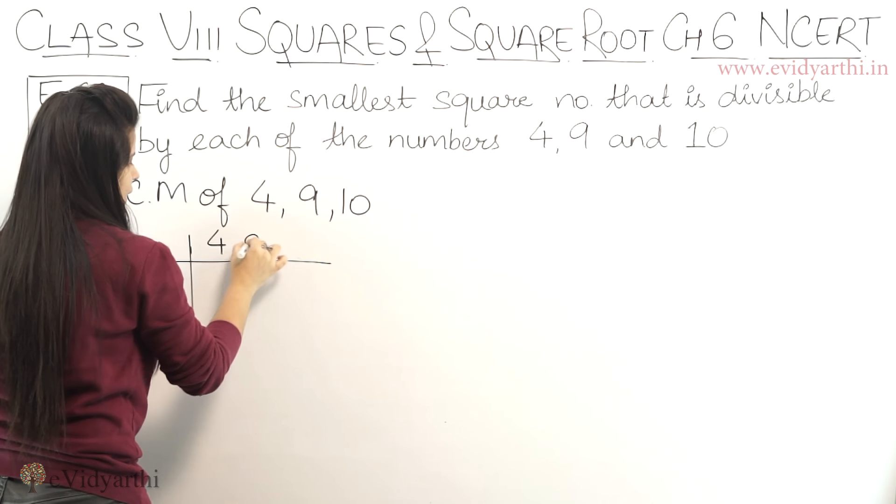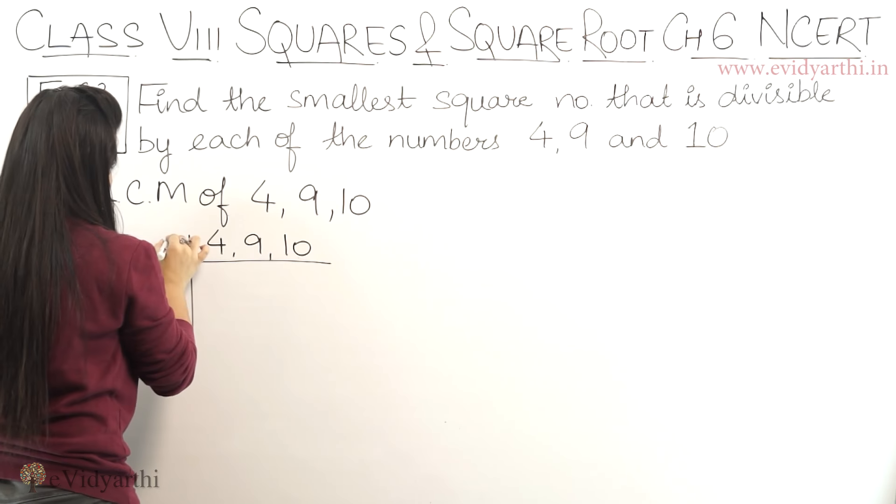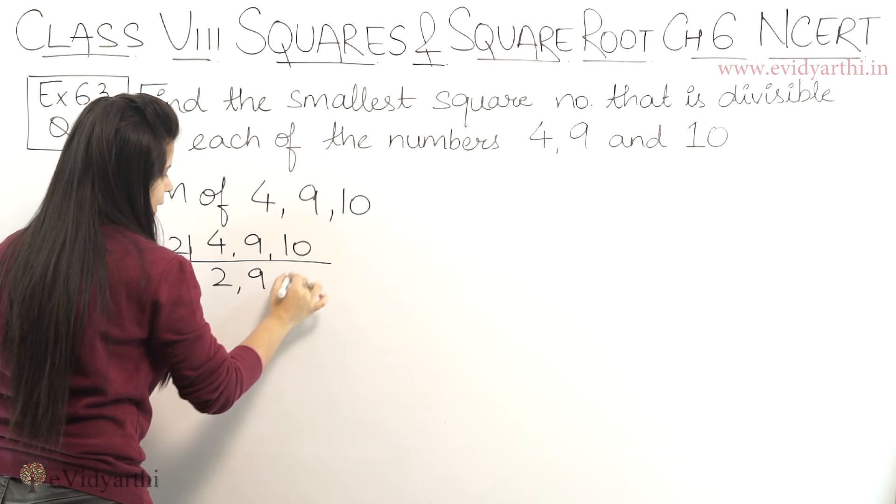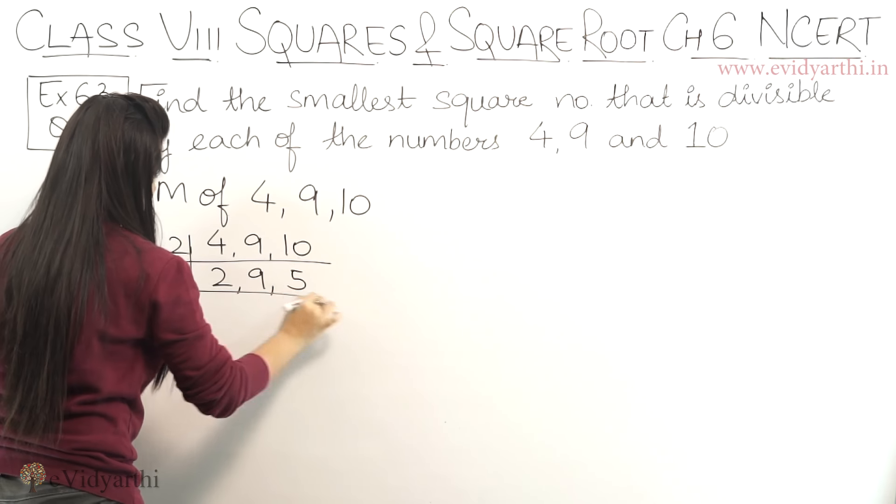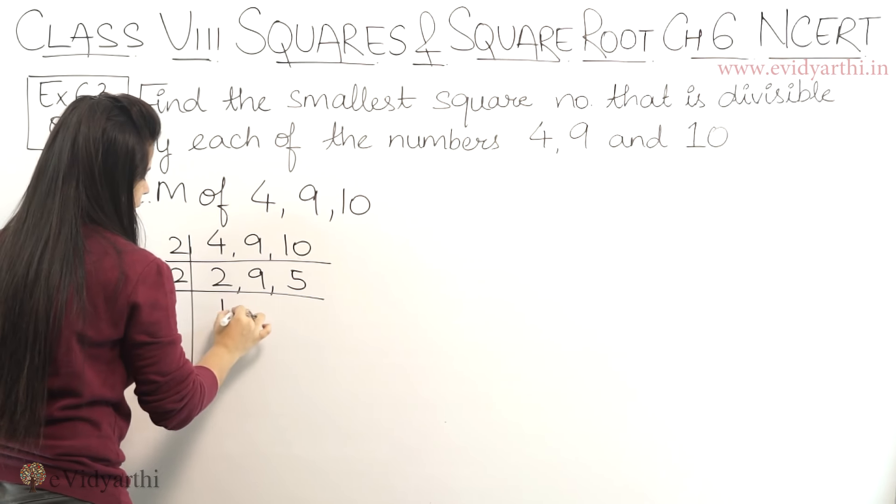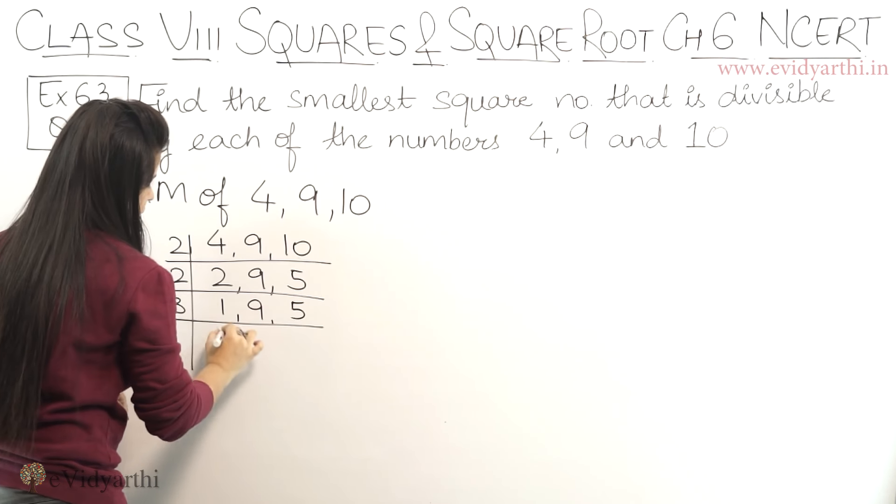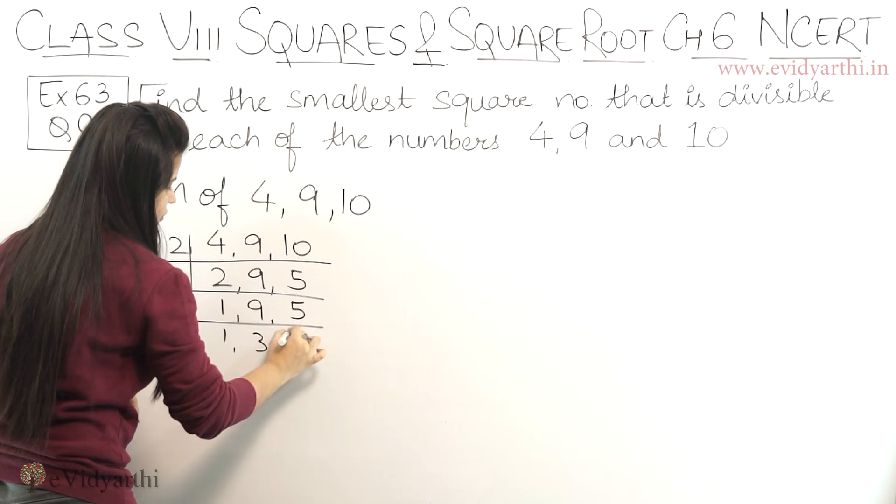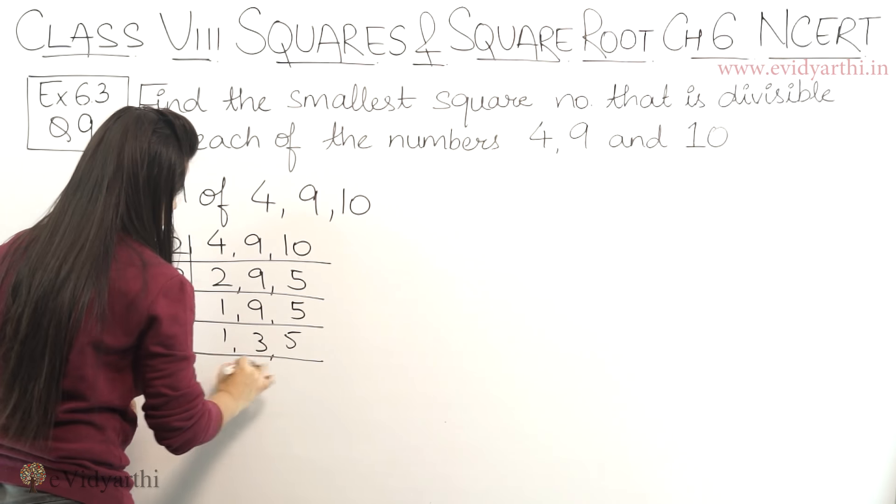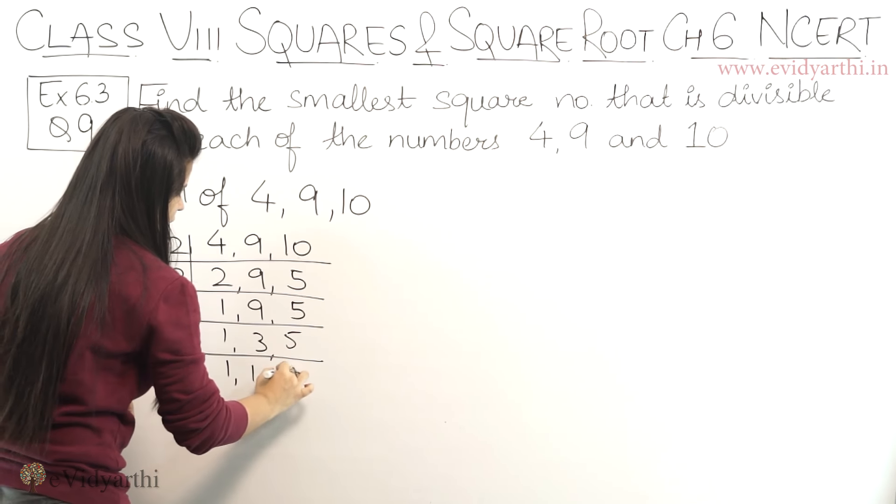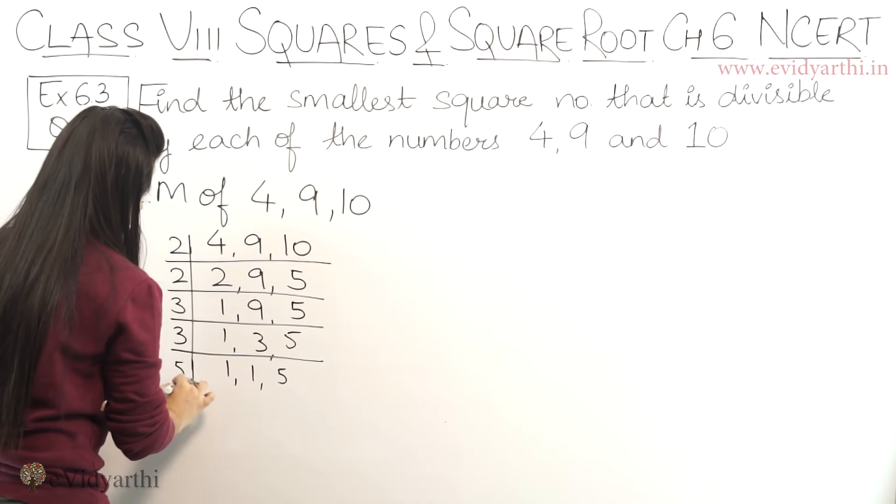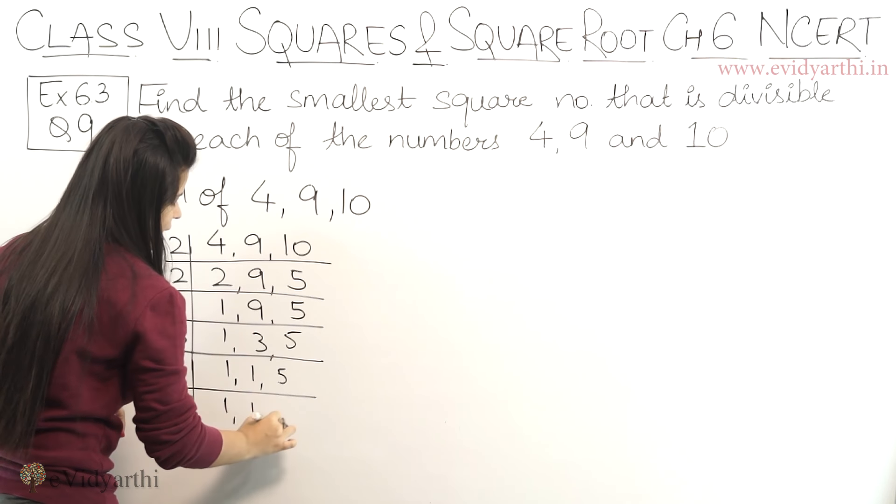4, 9, 10. 2 se start karte hai. We will get 2, 9, 5. Again with 2, 1, 9, 5. Then 3 se we will get 1, 3, 5. Again with 3, 1, 1, 5. Then with 5, 1, 1 and 1.